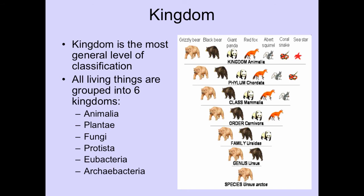We already know that prokaryotic means those cells do not have a nucleus and they're very simple and small, whereas eukaryotic means they do have a nucleus and are more complex. Kingdom Animalia, Plantae, and Fungi are all eukaryotic, because they all belong to the domain Eukarya. Eubacteria belongs to the domain Bacteria. Even though eubacteria and archaeobacteria are both prokaryotic cells, archaeobacteria is more specialized — those are bacteria that live in extreme conditions.